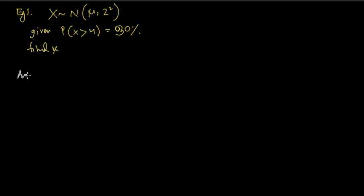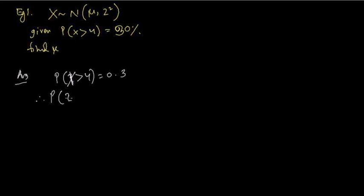We do the sum the same way we did it before. Probability of X greater than 4 equals 30%, which means 0.3. Note that this is not the z-score — this is x. Now we do the z-score: z is greater than (4 minus μ) divided by σ. The standard deviation is 2, so divided by 2, equals 0.3.